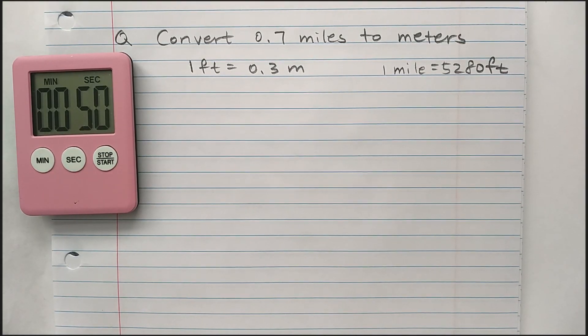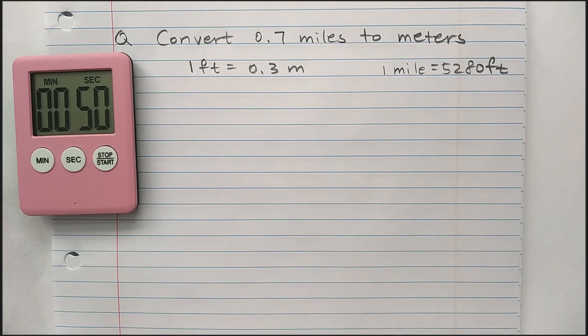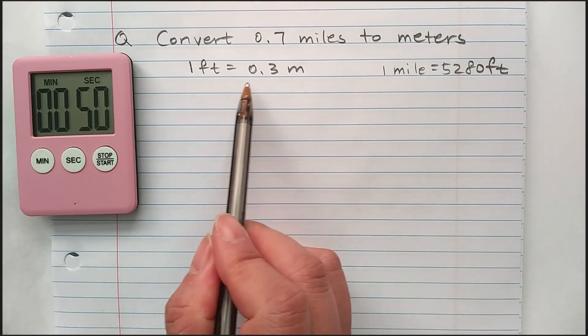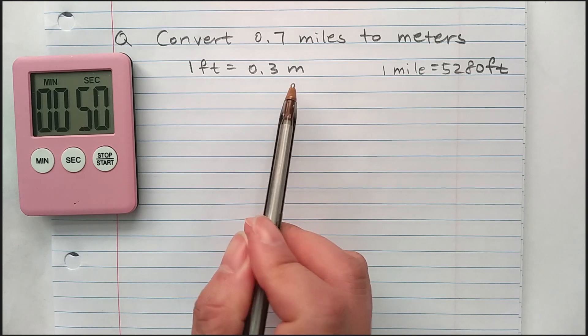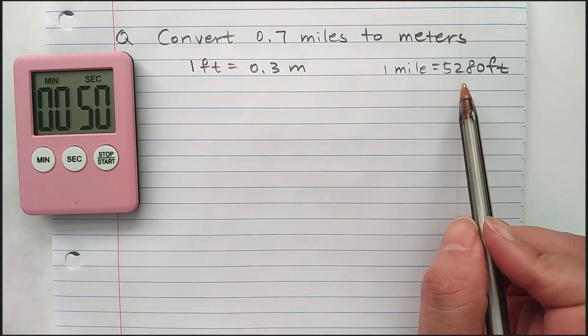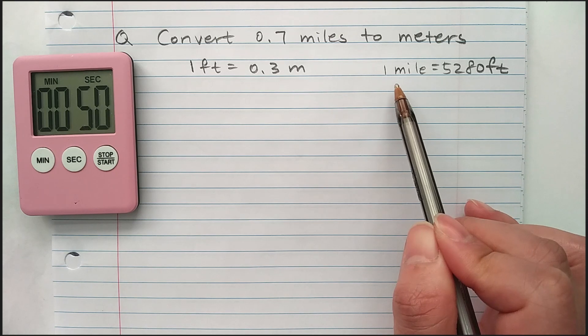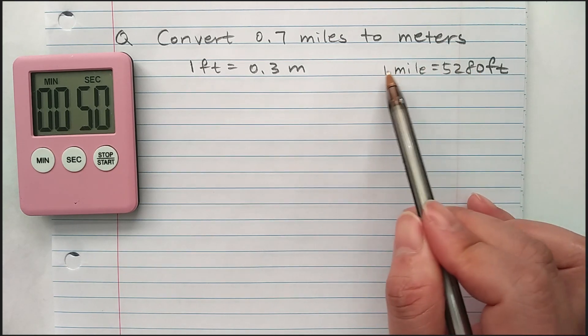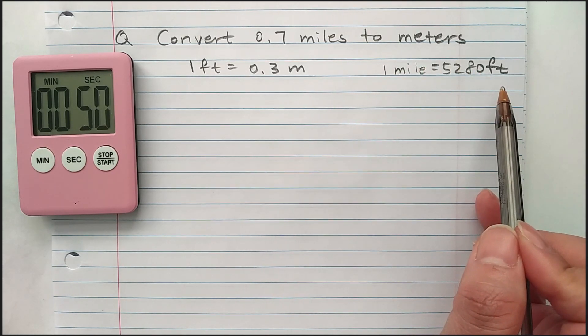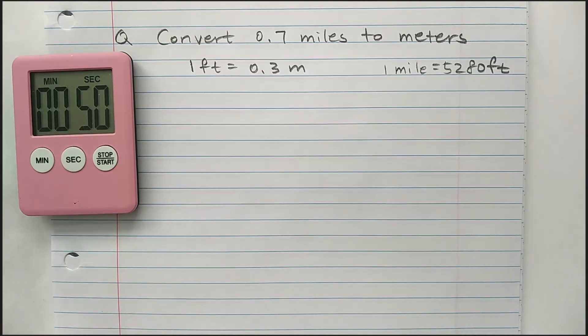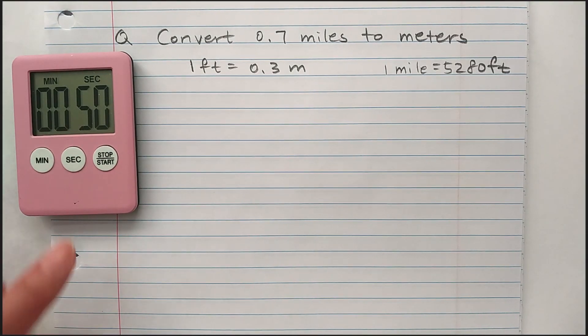Convert 0.7 miles to meters. Given 1 foot is equal to 0.3 meters. 1 mile is 5,280 feet. These numbers are not usually given so you would have to remember that. I will set 50 seconds. Go ahead and begin.